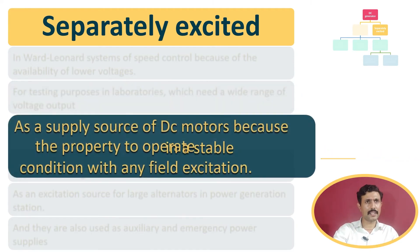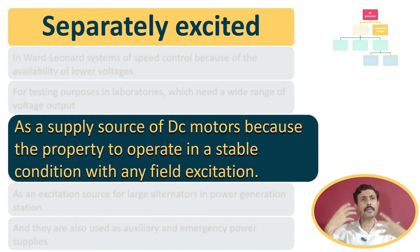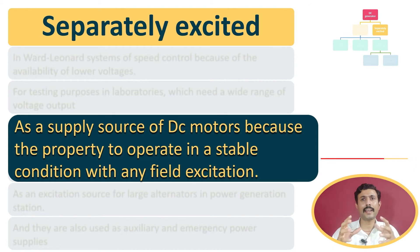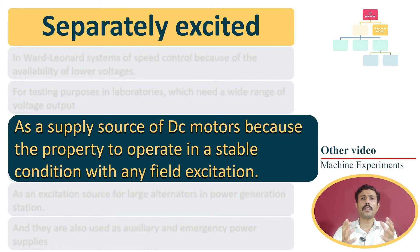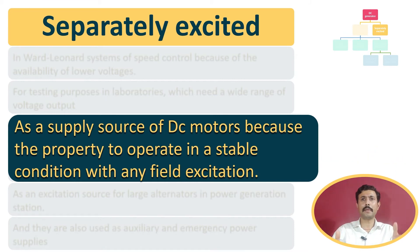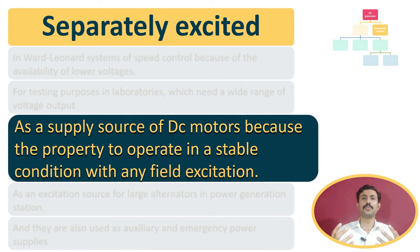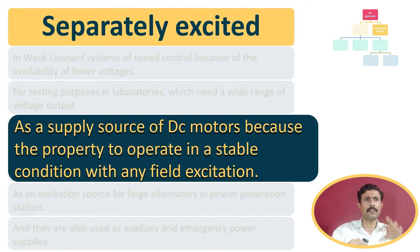The third application is that it can be used as a source of supply for DC motors. This DC generator has a separate field excitation, and because of it, it can be operated in stable condition for a wide range of induced EMF. This is the reason why it is used to supply DC motors.